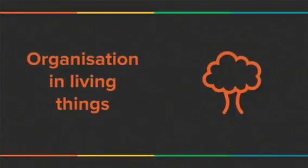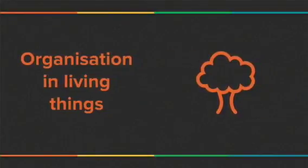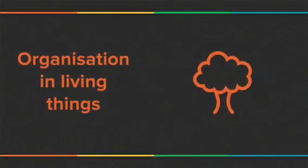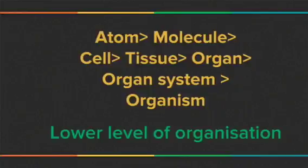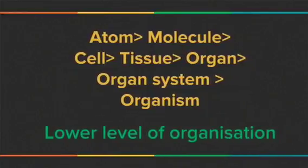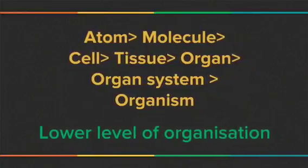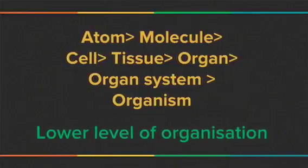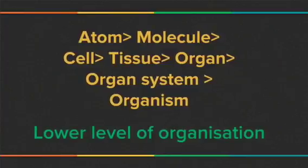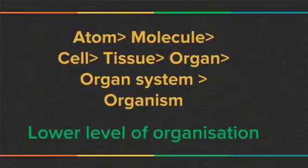Today we are going to learn about organization in living things. Atoms are organized into molecule, cell, tissue, organ, organ system, and organism.